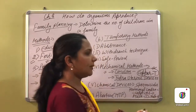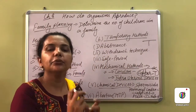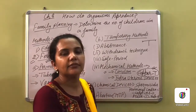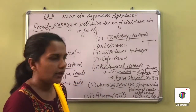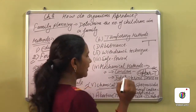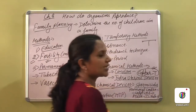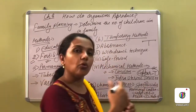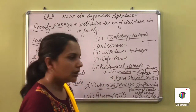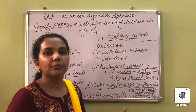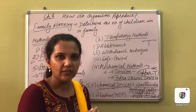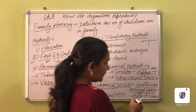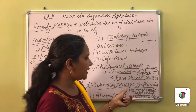The Copper T is a T-shaped copper tube which is fitted into the female uterus to prevent fertilization. After that, there are oral contraceptive pills. Commonly available in the market are Mala-D and Mala-N, which are oral pills used for contraception.